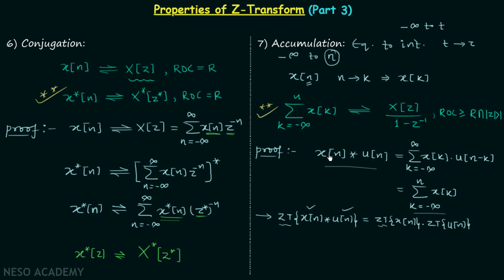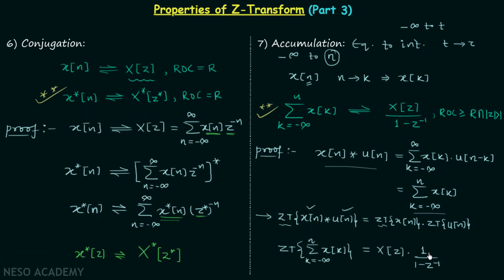From this it is clear that xn convolved with u(n) equals the summation from k = -∞ to n of xk. So the Z-transform of the summation from k = -∞ to n of xk equals the Z-transform of xn, which is Xz, multiplied by the Z-transform of u(n), which is 1/(1 - Z⁻¹). This will be derived in the coming lectures. Finally, this signal has Z-transform equal to Xz / (1 - Z⁻¹), proving the accumulation property.